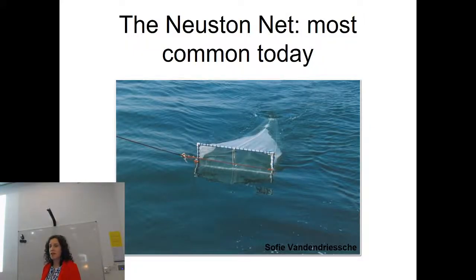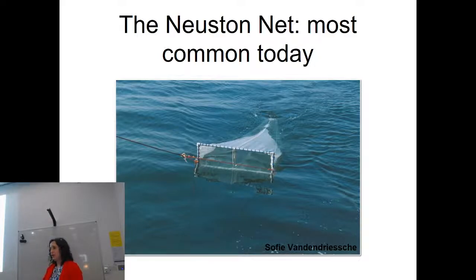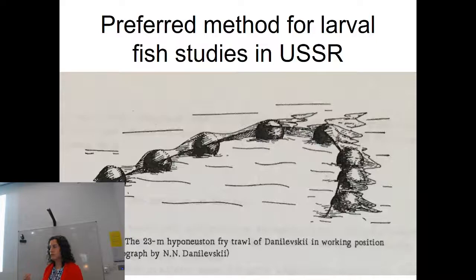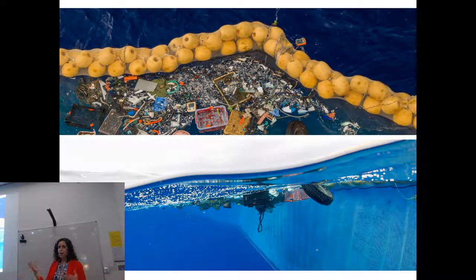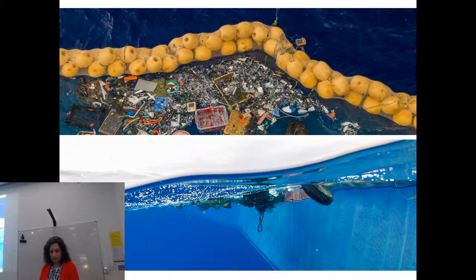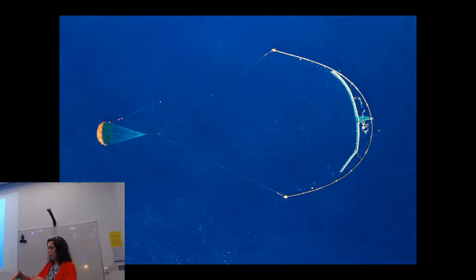To study neuston, scientists use something like a square net — half below the water, half above — dragged behind a ship for about 30 minutes. But the preferred method for scientists studying larval neustonic fish in the USSR was a system of floating buoys with a net falling down to some depth in a U-shape behind a ship. This looks very similar to the Ocean Cleanup's current system: buoys on the surface, a net wrapping around and falling below, in a U-shape to catch and hold neuston.